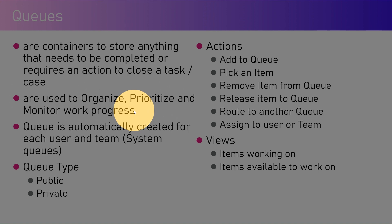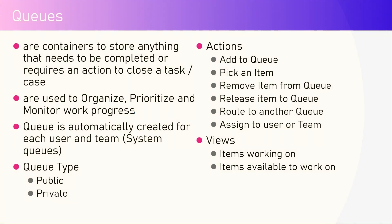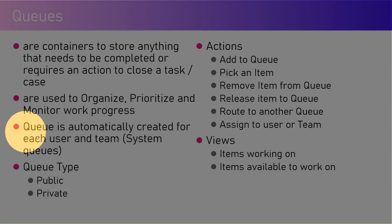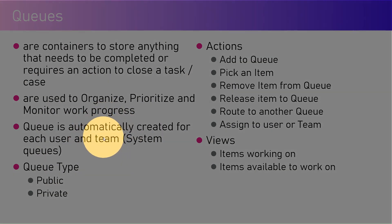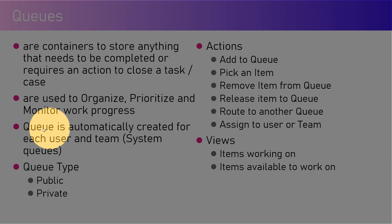Assume you have a set of cases or an incident being reported by your customer. You can put all those cases in a queue, and the queues are monitored by work agents. You can create any number of queues. Queues are automatically created for each user and team - whenever you create a new user, a queue gets created for them by default, and when you create a team in Dynamics 365 a queue will be automatically provisioned. These are called system queues.